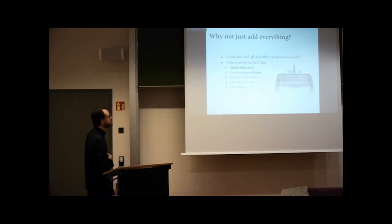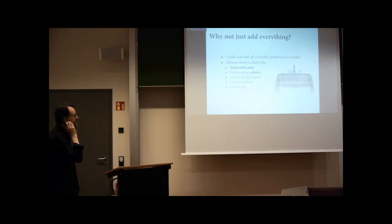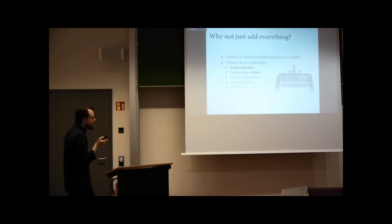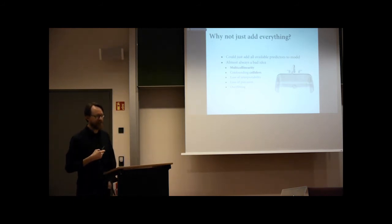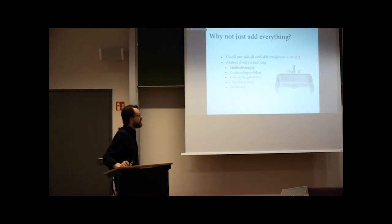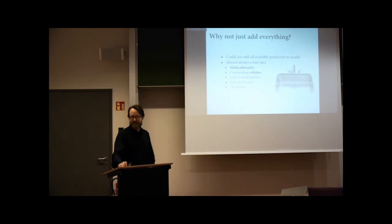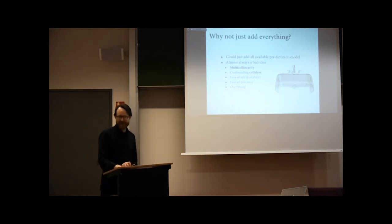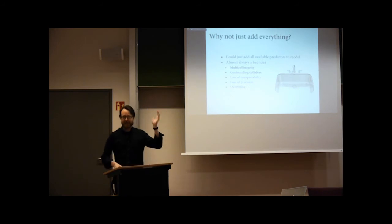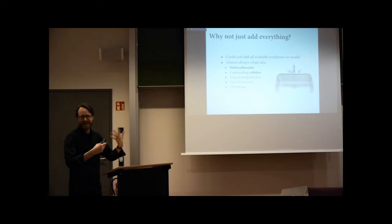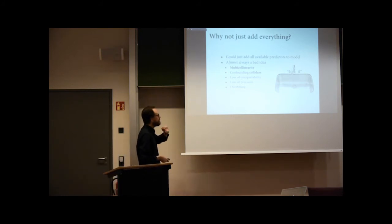Models with lots of predictors may be really good at predicting even out of sample, but it's not clear that we learn anything as basic research scientists from them. There may be great machine learning techniques that make really good predictions, but we don't understand how they work, so as scientists we don't learn anything about the system. My job is to understand how the universe works — at least where humans came from. Interpretability matters. You could also lose precision, and next week is all about overfitting, which I think is the most important problem in applied statistics.